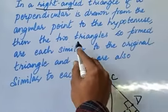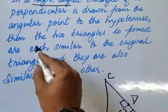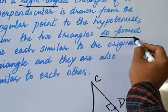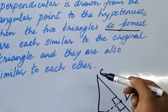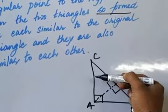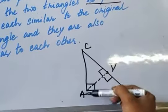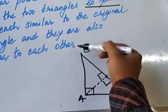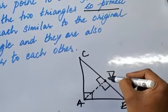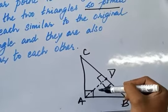Then the two triangles so formed means after doing this step you see there are two triangles that are being formed. That is this triangle and this triangle. Originally we had only one triangle, that was A, B and C. Because of drawing this perpendicular, new triangles have been formed.